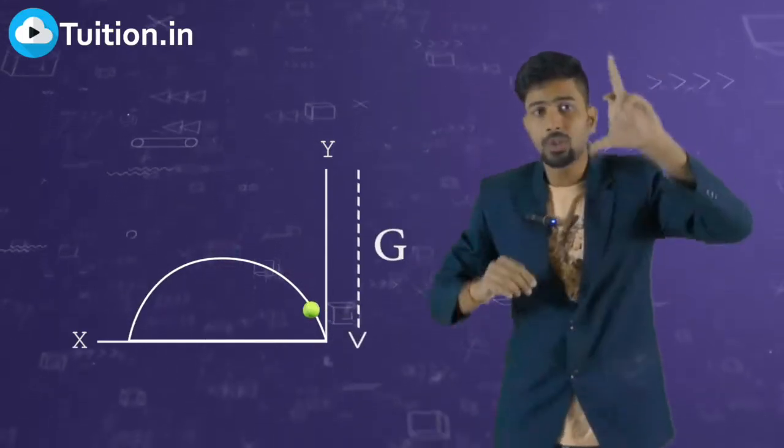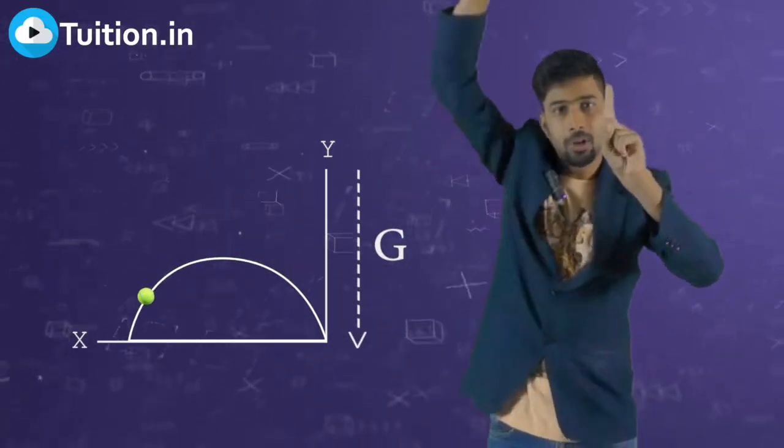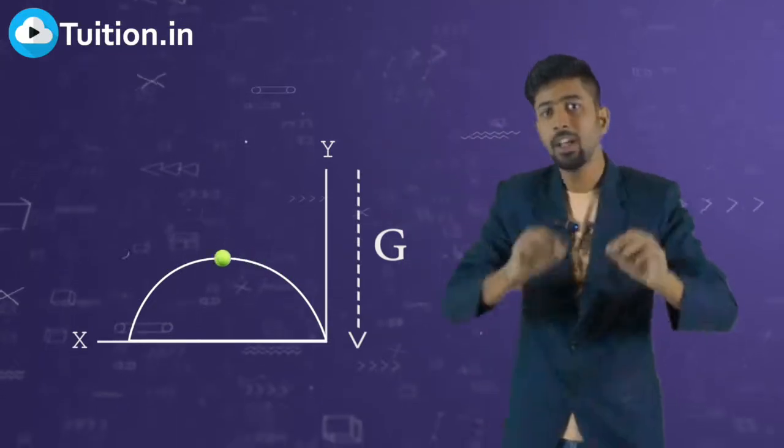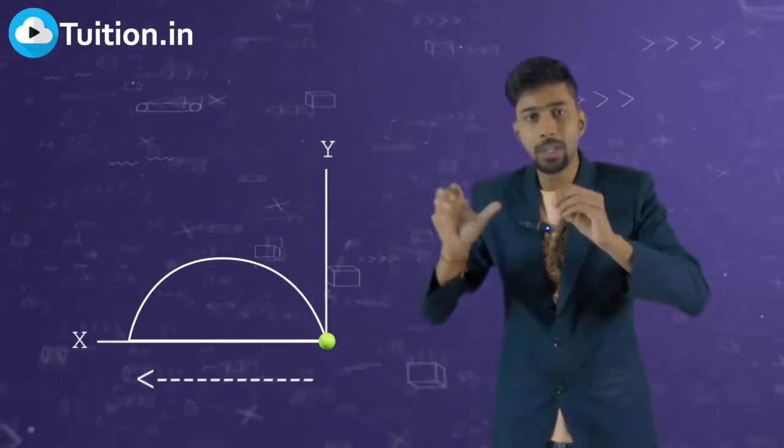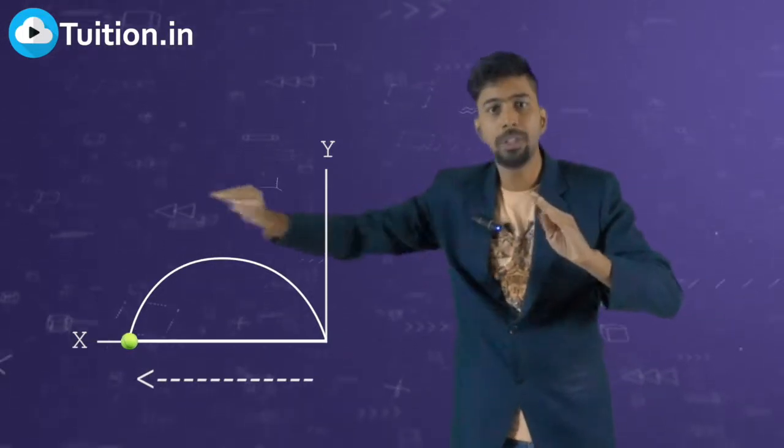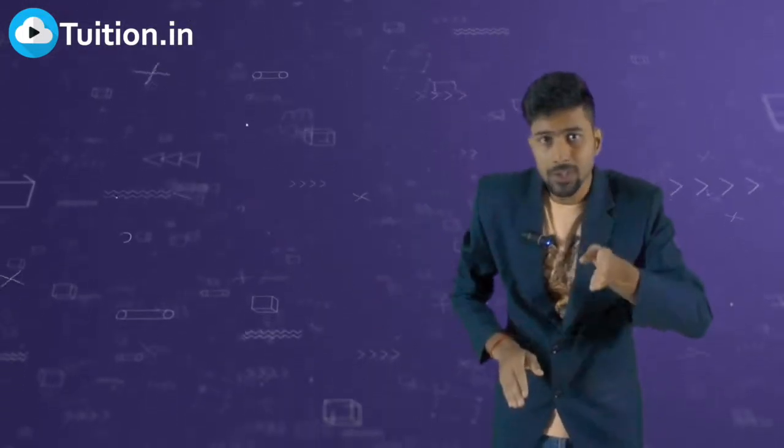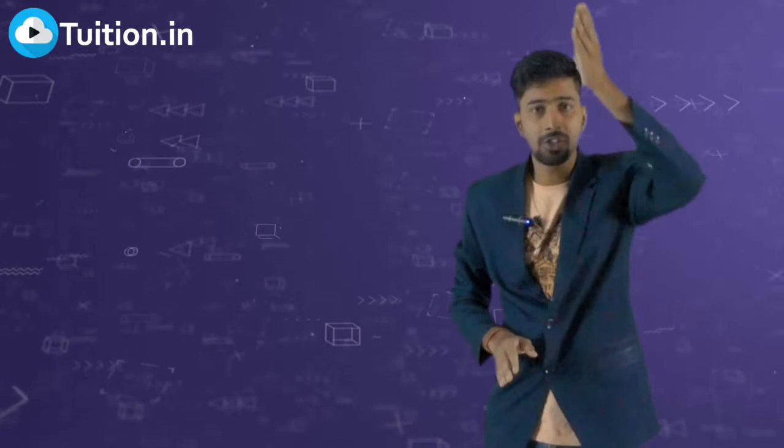But in our projectile motion, when it is under gravity, this Y velocity is acted upon by gravity. So it's opposed by gravity, but your X velocity is unaltered. So the body will keep moving in the X direction uniformly with uniform velocity.